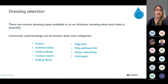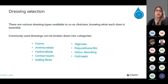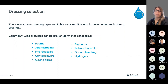We're going to look at dressing selections available, and knowing what each one does is essential because that will help you manage the wound effectively. Commonly used dressings can be broken down into categories: foams, antimicrobials — used for infected wounds or wounds with a high bio-burden — hydrocolloids, contact layers, gelling fibers and alginates, polyurethane film, odor-absorbing dressings, and hydrogels. We're going to look at some of these in more depth.